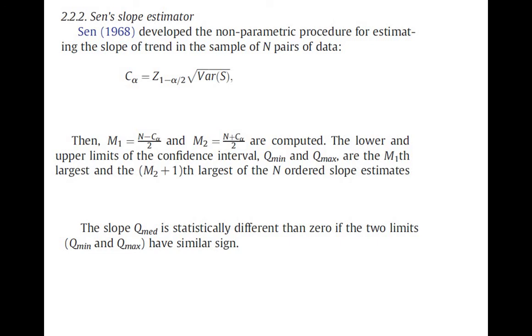Qmed and Qmed is statistically different from zero if Qmin and Qmax have similar sign. That means if we find out the slope of trend, that slope will be significantly negative or positive. If otherwise, if the Qmin and Qmax have same sign.